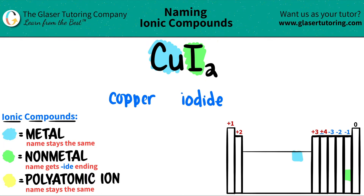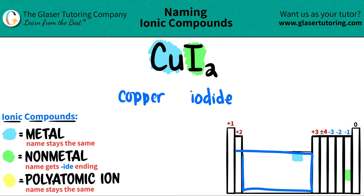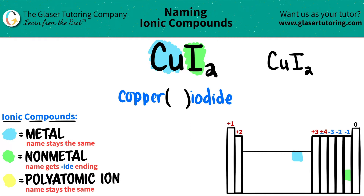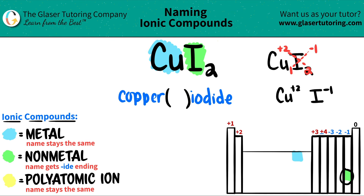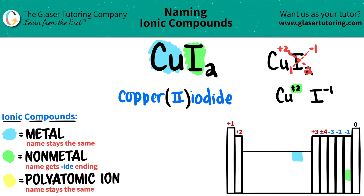Now we just need to determine whether we need a Roman numeral or not. Transitional metals need a Roman numeral, and since copper is in this block, we do need one. The Roman numeral is always the charge of the metal. All we do is take the subscripts and crisscross them back up. We had one copper and two iodines — the two told us iodine is negative one, and that tells us copper is a plus two. Since iodine being negative one checks out with its oxidation trend, copper is confirmed as plus two. So the Roman numeral is II.